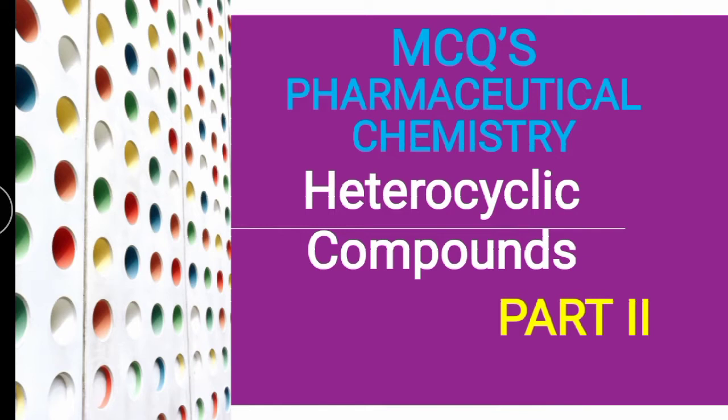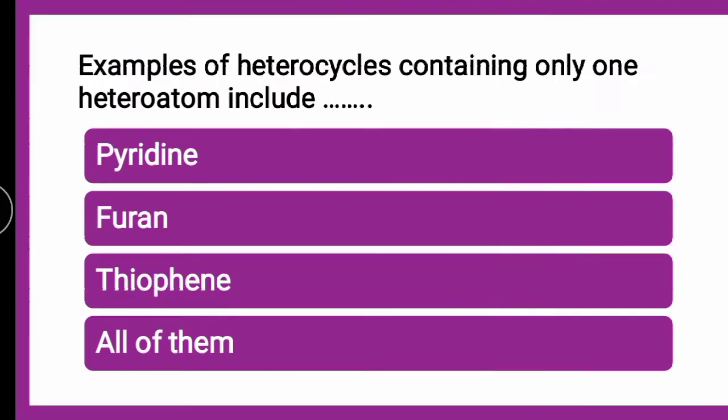To start with the first MCQ: the question is — examples of heterocycles containing only one heteroatom include dash. Before going to this part 2, I would request you to go through part 1 first, because in part 1 we covered the thorough classification of heterocyclic compounds. In that we have seen the heterocycles are classified as 5-membered, 6-membered, fused heterocycle, 7-membered, and so on.